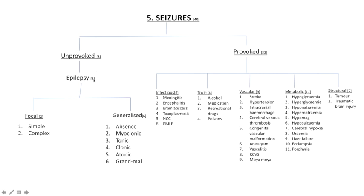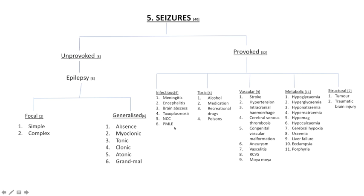Within the umbrella of epilepsy, there are eight possible etiologies. Moving on to the provoked causes of seizures, we look at infectious, toxic, vascular, metabolic, and structural categories, encompassing about 32 varied etiologies. Infectious causes include meningitis or encephalitis — sometimes combined as meningoencephalitis — brain abscess, toxoplasmosis, neurocysticercosis, and PML, which is progressive multifocal leukoencephalopathy. This is especially important to look out for in immunocompromised patients and is notably associated with HIV.